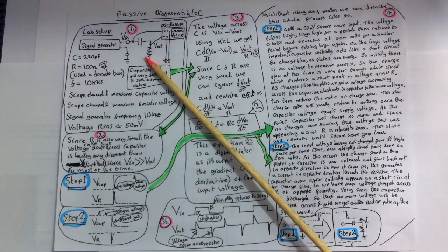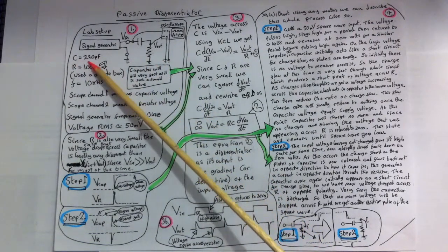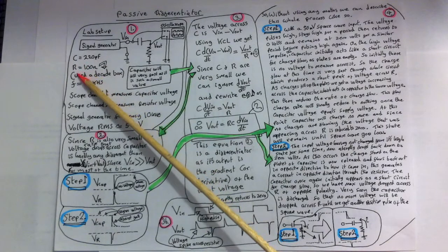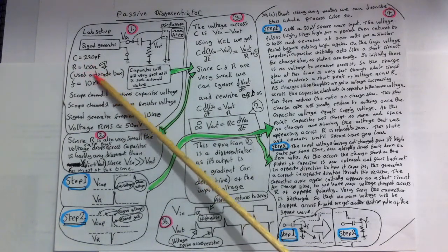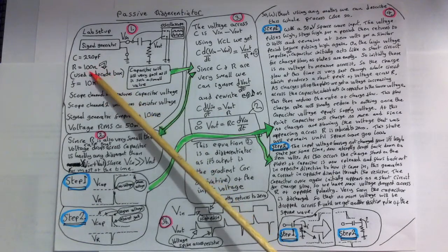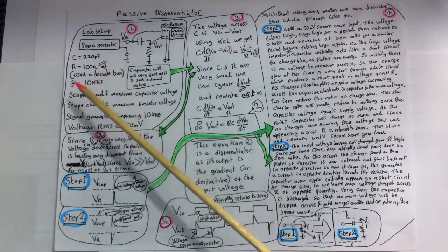Here are the values we will use for this experiment. We're going to use a 220 picofarad capacitor, a 100 ohm resistor using a decade box so that we can see the effects of changing this resistance value.